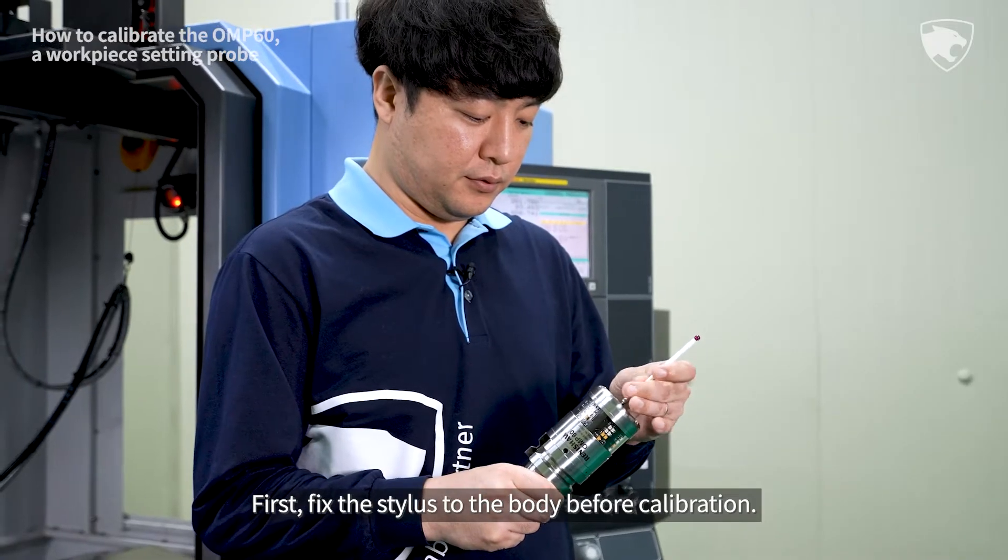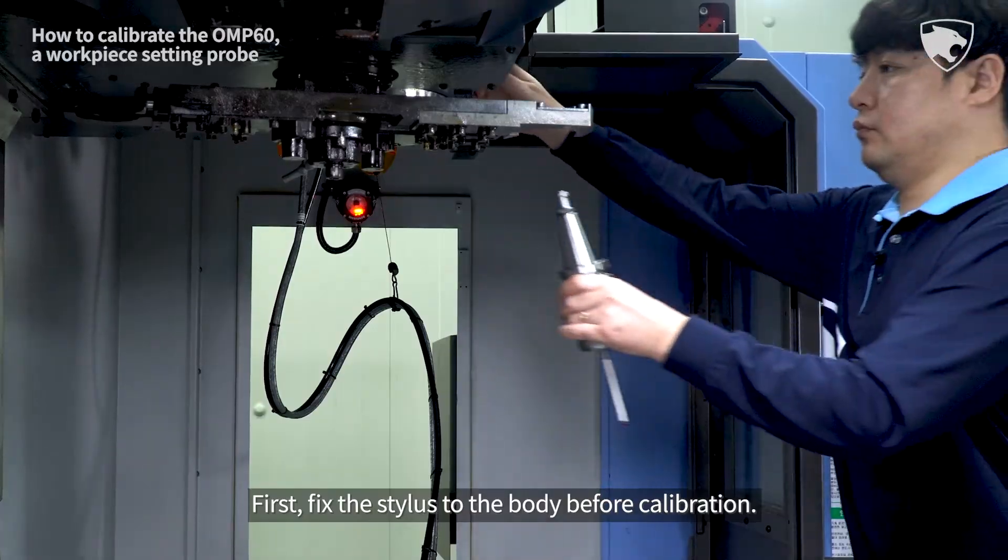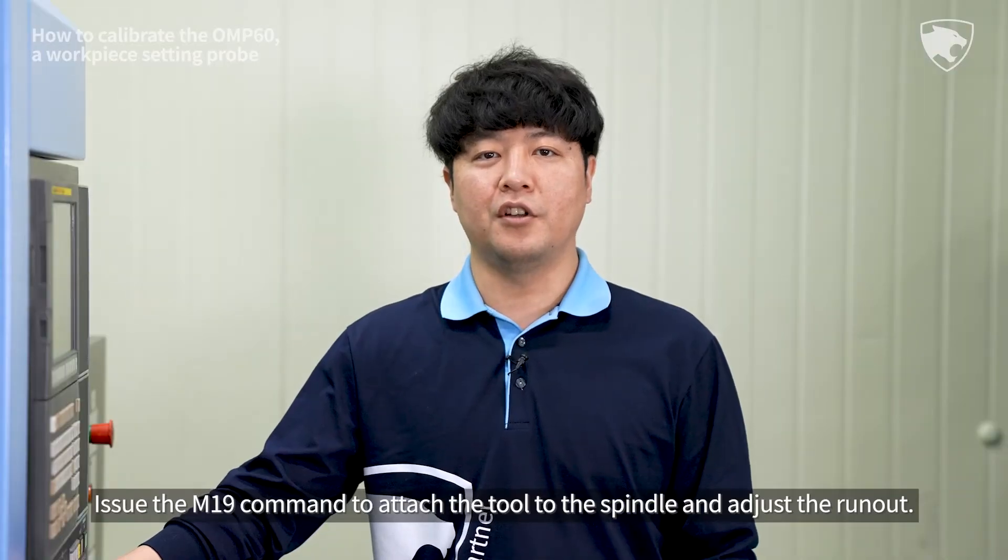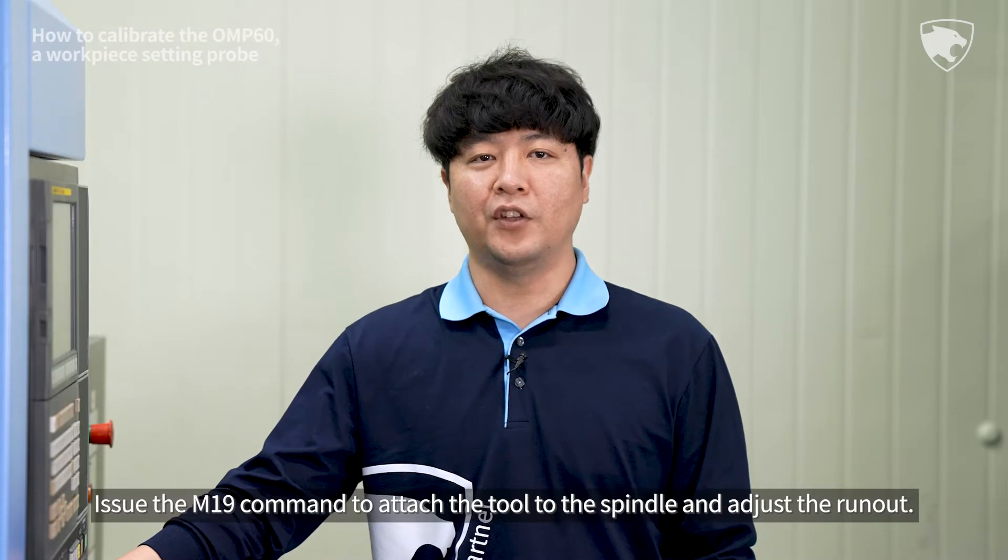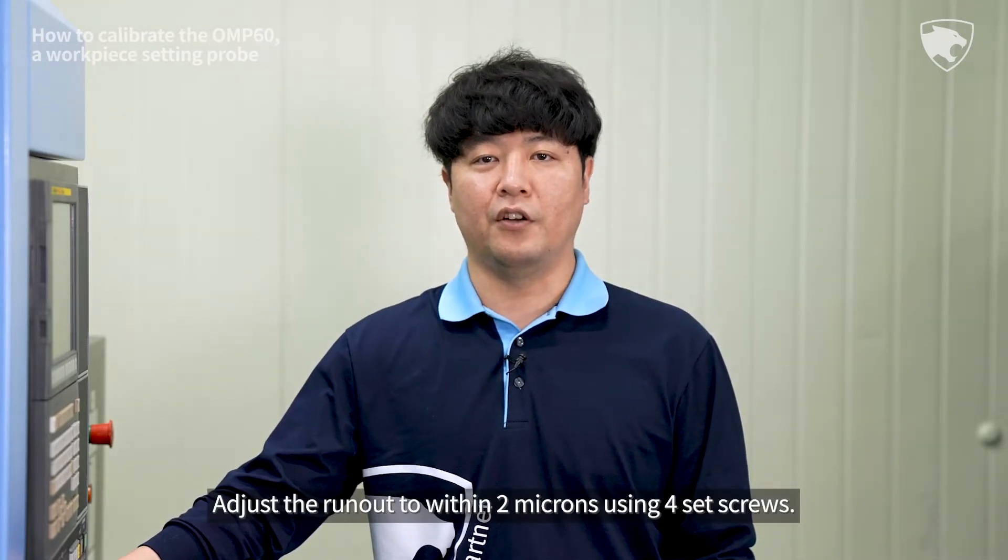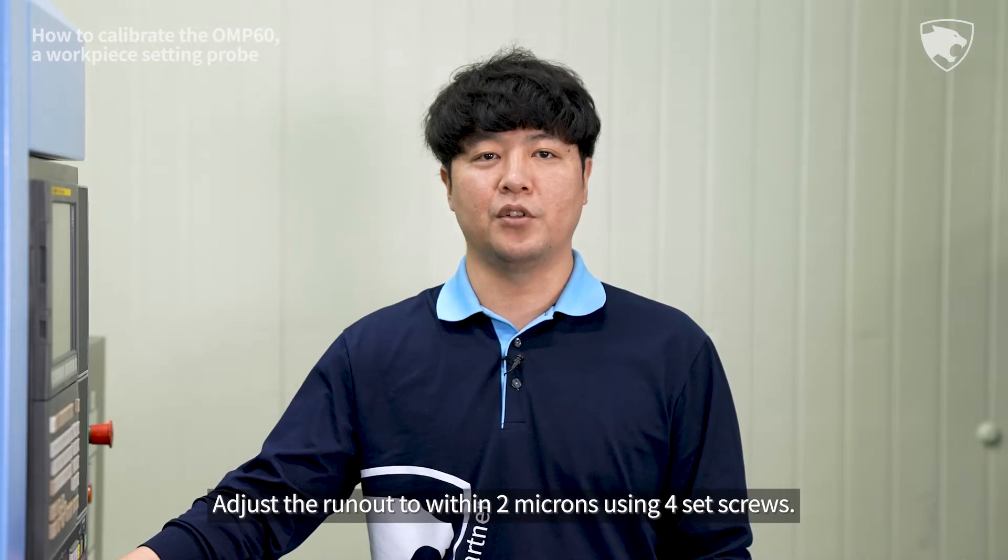First, fix the stylus to the body before calibration. Issue the M19 command to attach the tool to the spindle and adjust the runout. Adjust the runout to within 2 microns using 4 set screws.